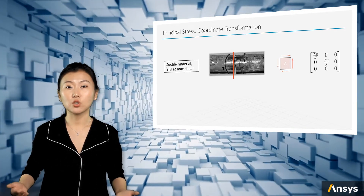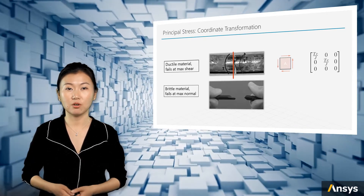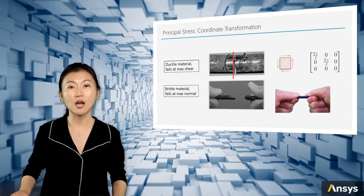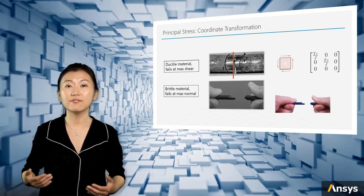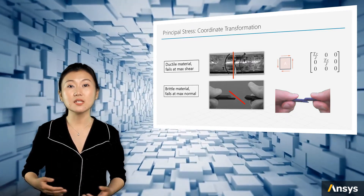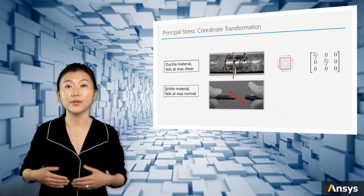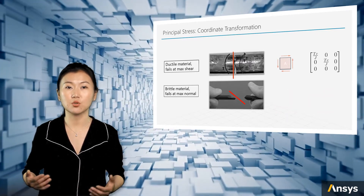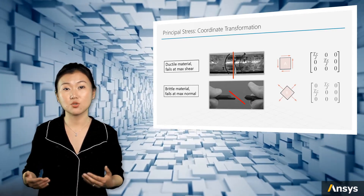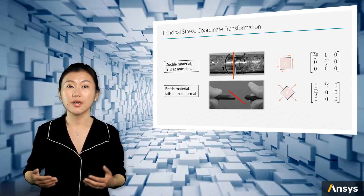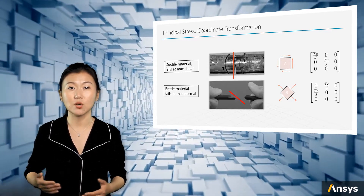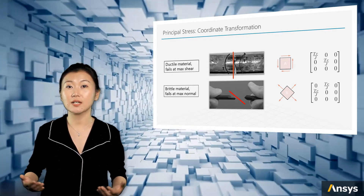However, if the torsion bar is made of brittle material — for example, a piece of chalk or a concrete column — you will find the failure plane is usually 45 degrees to the axis. This is because brittle materials fail when normal stress reaches a certain value. So it makes sense to evaluate stress in brittle materials using a coordinate system that reflects the maximum normal stress value, just like position B.